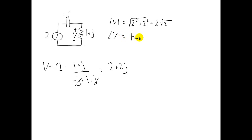The angle can be found by taking the inverse tangent of the imaginary component divided by the real component, which gives us a phase angle of 45 degrees.